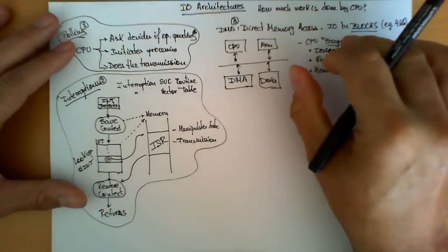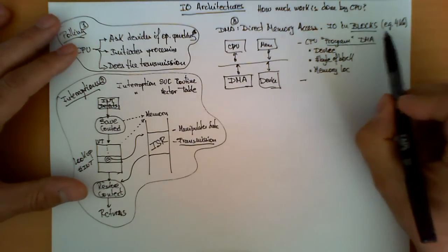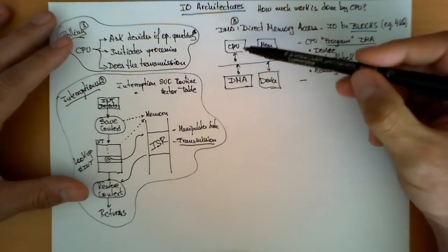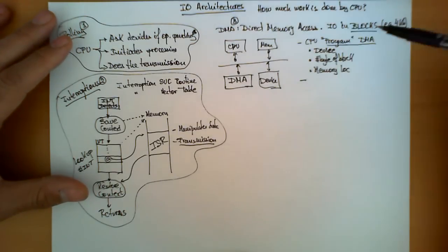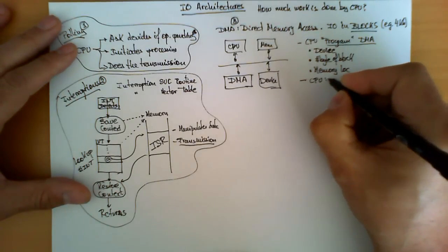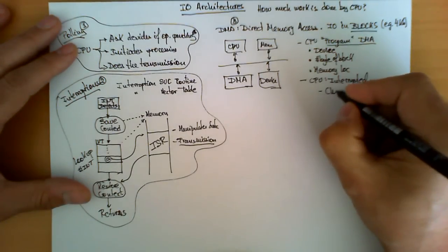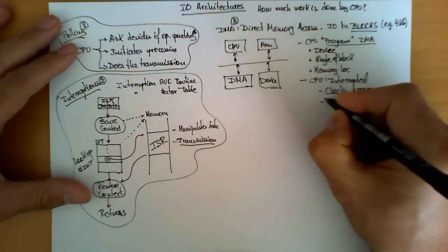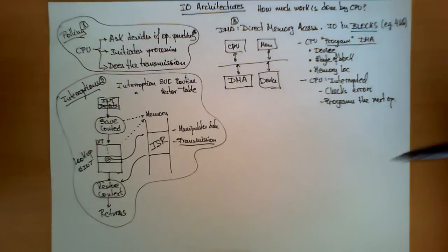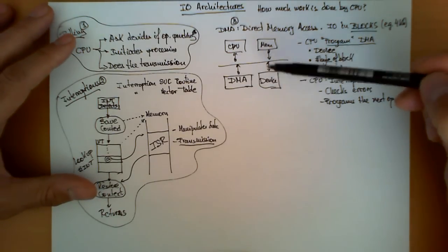The main difference between strategy three and strategy two is that a significant portion of data handling — especially for block-based devices such as hard drives — is passed on to the DMA circuit. The CPU only provides basic programming parameters and the rest is taken care of. Once the device finishes the transmission, the CPU still needs to be interrupted; we still rely on an interruption-based mechanism so the CPU can check for errors and sometimes program the next operation.